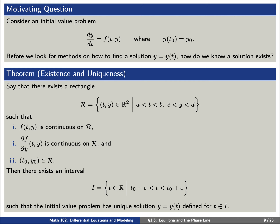Say that we have a rectangle R where t is between a and b, and y is between c and d, such that three properties hold. First, the function f(t, y) is continuous in this rectangle. Second, the partial of f with respect to y is continuous in this rectangle. And third, the initial point (t₀, y₀) is a point in this rectangle. Then there exists an interval for time t such that the initial value problem has a unique solution on this interval.